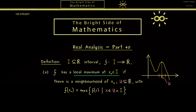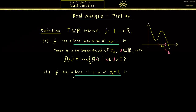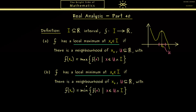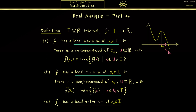So let's add this to our definition. We say the function f has a local minimum at the point x0 if there is a neighbourhood of x0, also called U, such that f is the minimum of the function when we restrict it to the neighbourhood U. Then finally we have the last part of the definition which is about local extrema — this is just a name to combine both maximum and minimum. Hence we say f has a local extremum at x0 if f has a local maximum or a local minimum at x0.